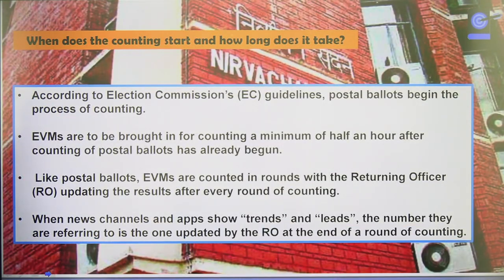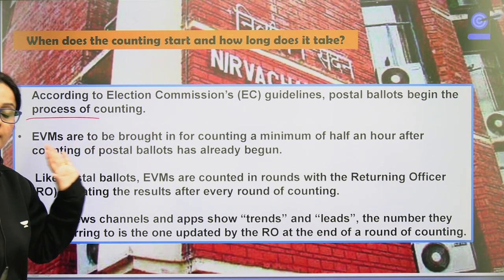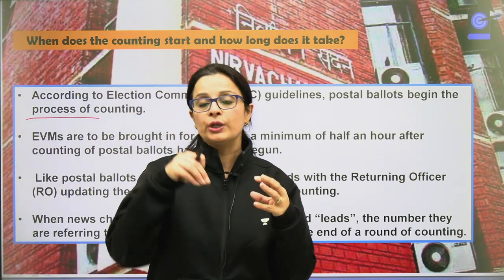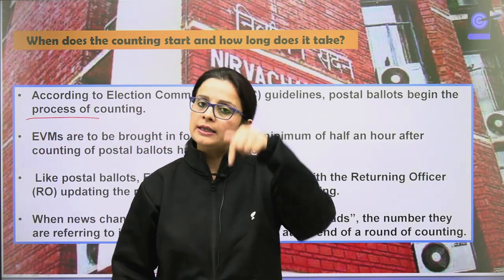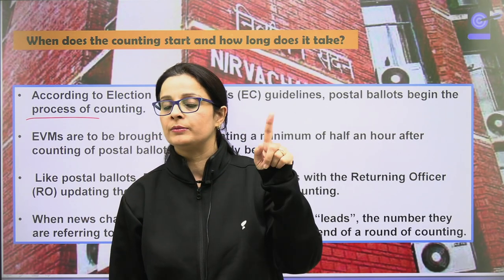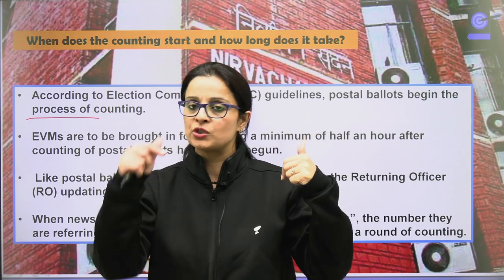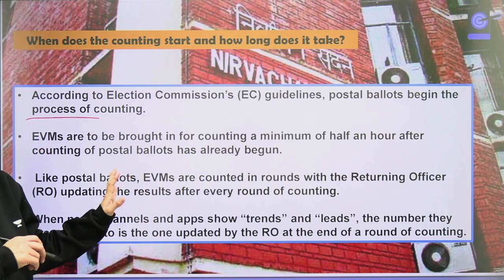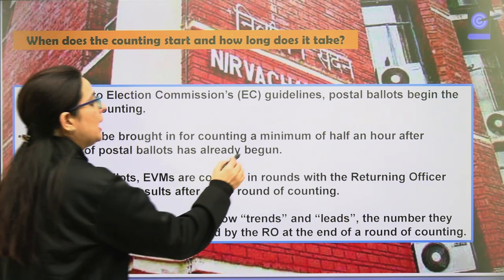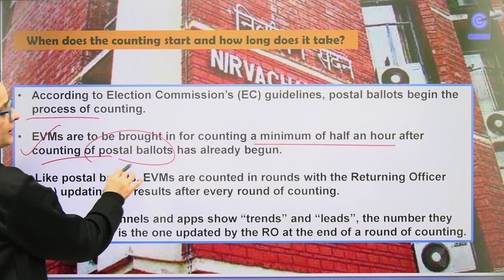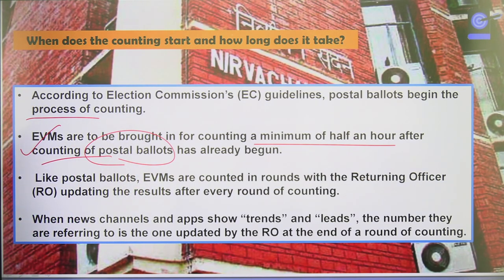When is counting started and how much time does EVM counting take? We will understand step by step. According to the guidelines of the election commission, the process of counting of postal ballots starts first. The postal ballots — like for army officers who don't have a local constituency — their counting is started first. EVM counting begins at least half an hour after postal ballot counting has started.